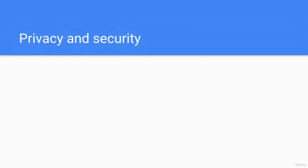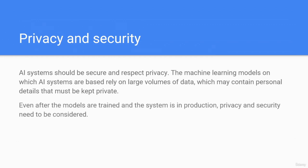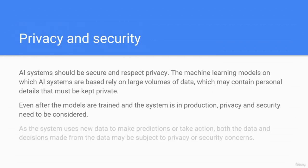Privacy and security: AI systems should be secure and respect privacy. The machine learning models on which AI systems are based rely on large volumes of data that may contain personal details that must be kept private. Even after models are trained and the system is in production, privacy and security need to be considered, as both the data and decisions made from the data may be subject to privacy or security concerns.